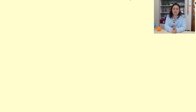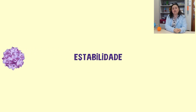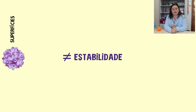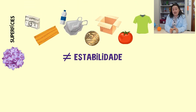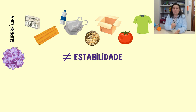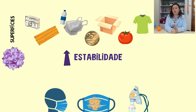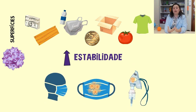Os vírus possuem diferentes graus de estabilidade de acordo com a superfície em que se encontram — por exemplo, tecidos, metais, plásticos, até mesmo papel. Essas diferentes superfícies podem conferir diferente viabilidade e estabilidade às partículas virais. Outra observação bem importante é que a estabilidade do vírus aumenta na presença de secreções de mucosa. Assim, o contato com lenços e máscaras contaminadas aumenta o risco de contaminação por quem está manipulando.